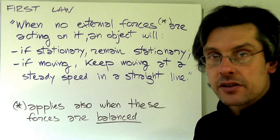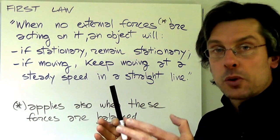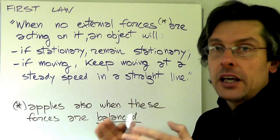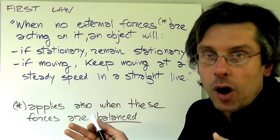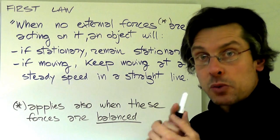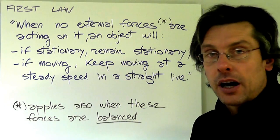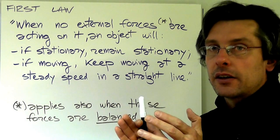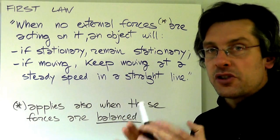This object will have two choices. The first choice: if the object was still, it was not moving, it will keep not moving. That's pretty obvious—it doesn't take a genius to figure that out. But what's really interesting is the second part.